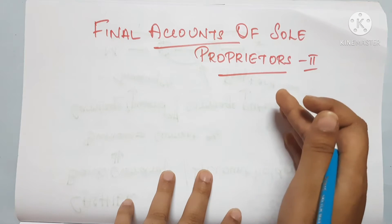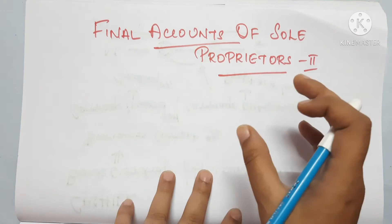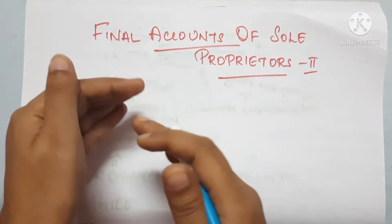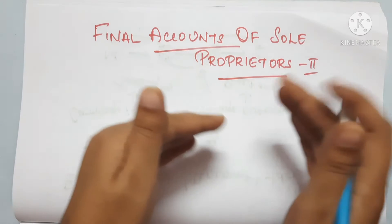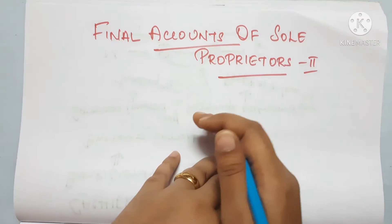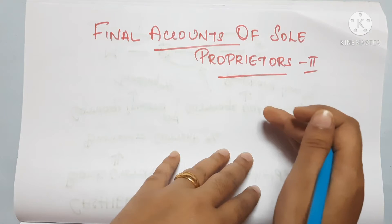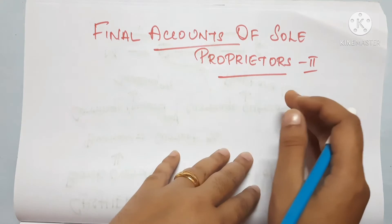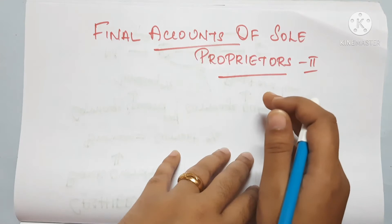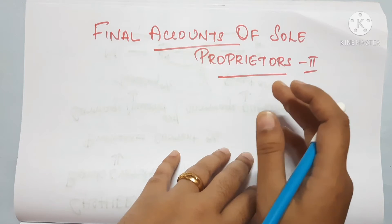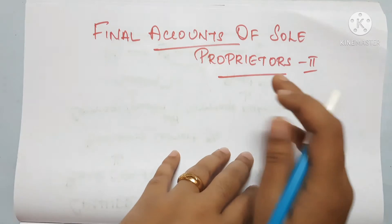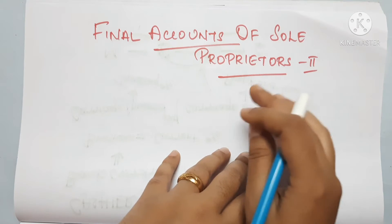We are going to do a trial balance — a full process. We are going to work out from day one, editing from 1st April to 31st March. So we are going to do a final account, and we are going to do a lot of adjustments. Some entries are missed or not recorded.